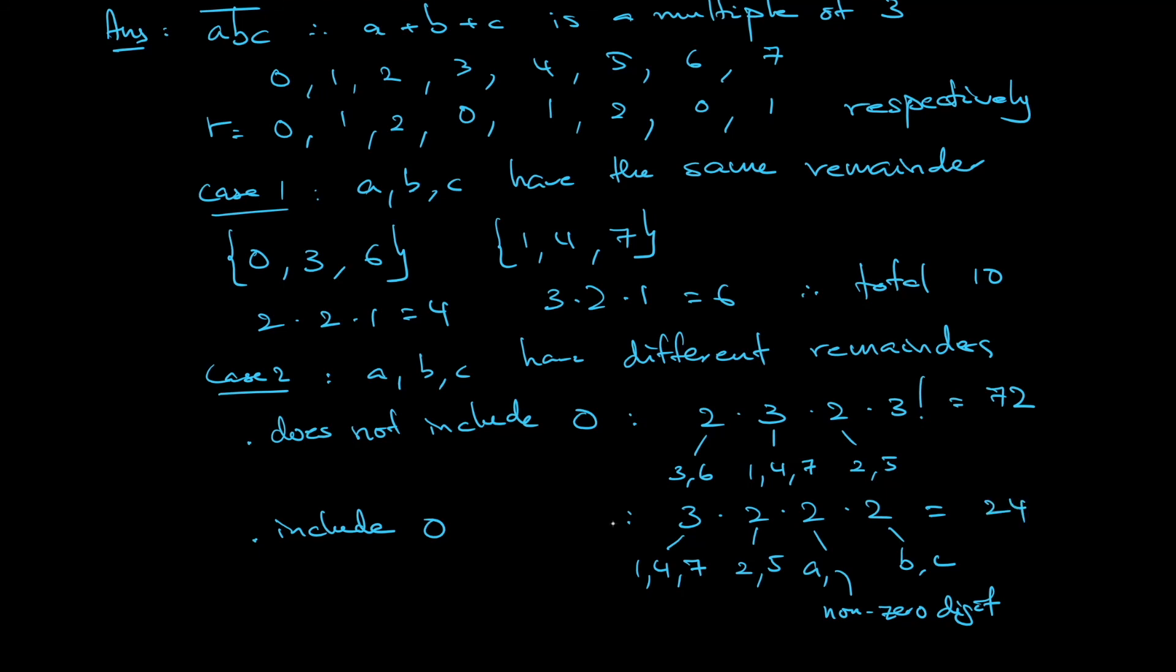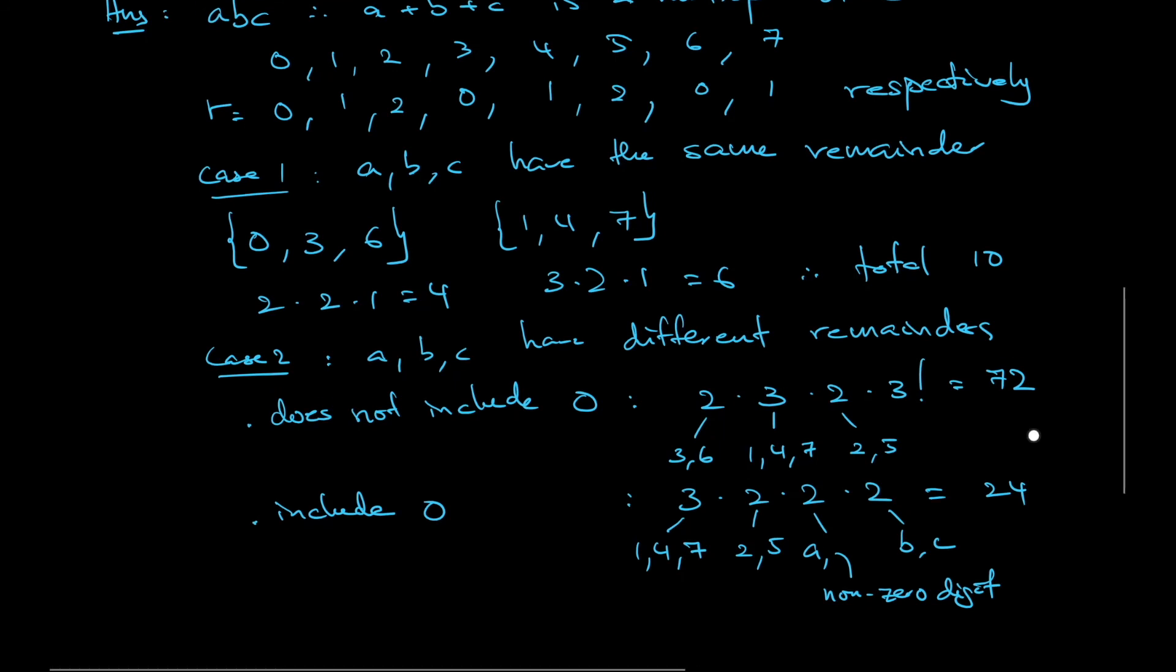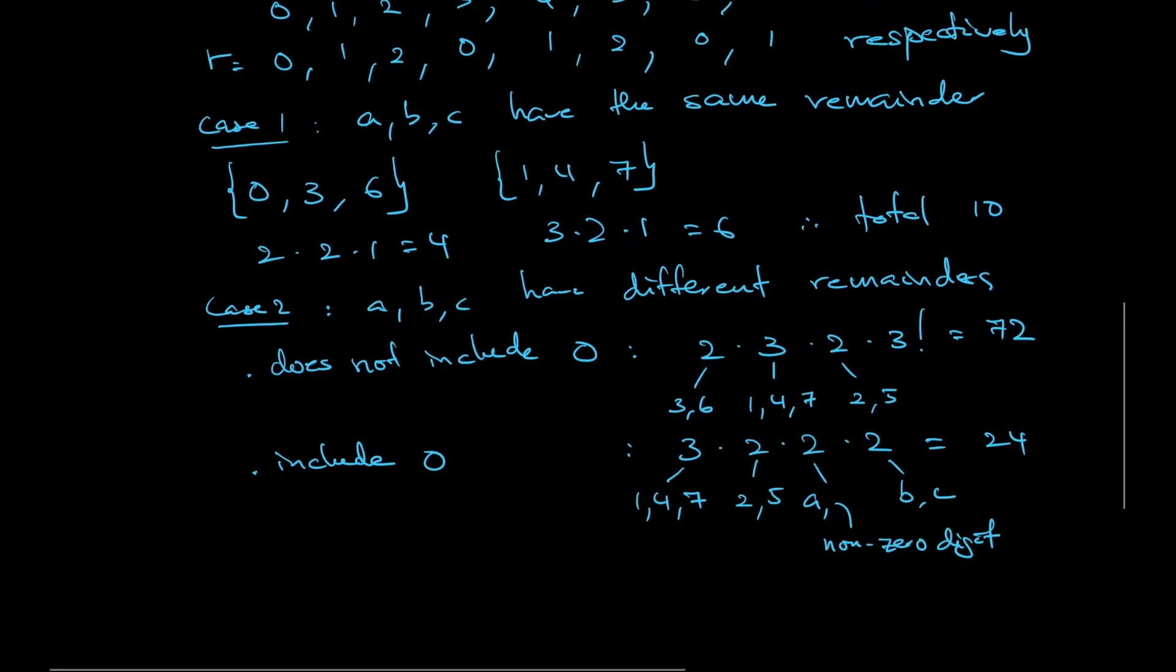And then you add together. Initially you have 10, 72, that's 82. 82 plus 24, all together you get 106. So the answer is 106.